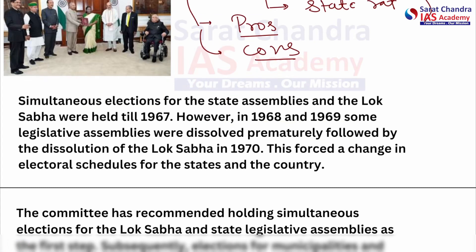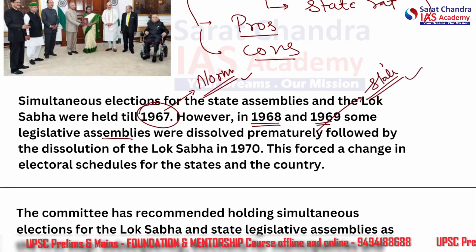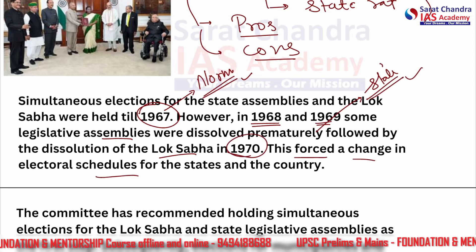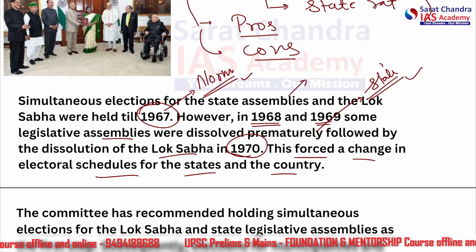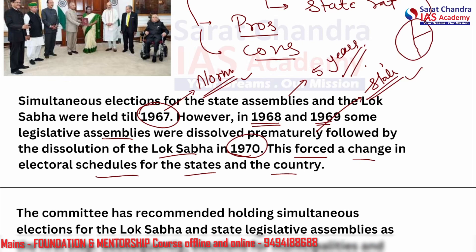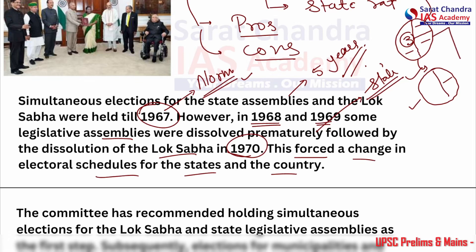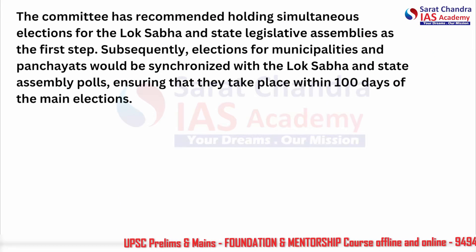Simultaneous elections for the state assembly and Lok Sabha were held till 1967 — that was the norm earlier. However, in 1968 and 1969, some state assemblies were dissolved prematurely, followed by the dissolution of the Lok Sabha in 1970. This forced a change in electoral schedules. While the term gap is the same — five years — various different groups of states now have elections in different years, and this is the problem to be solved by this recommendation.